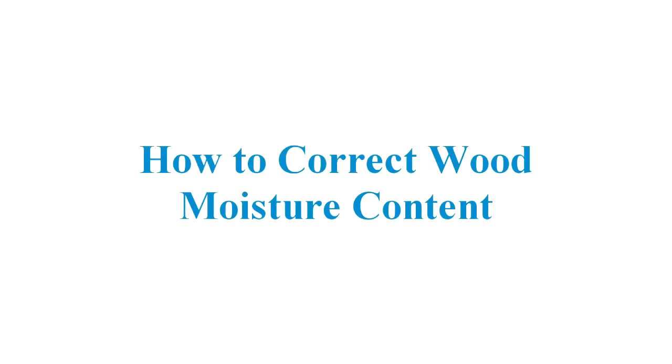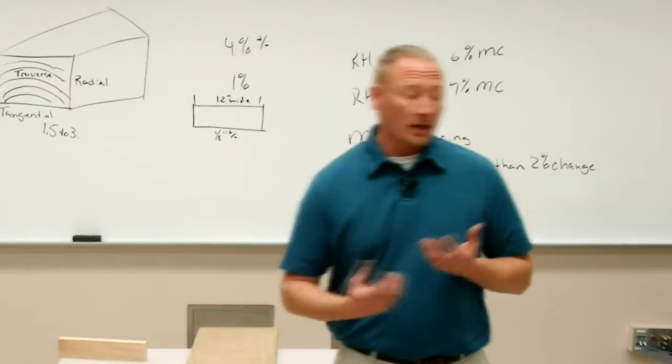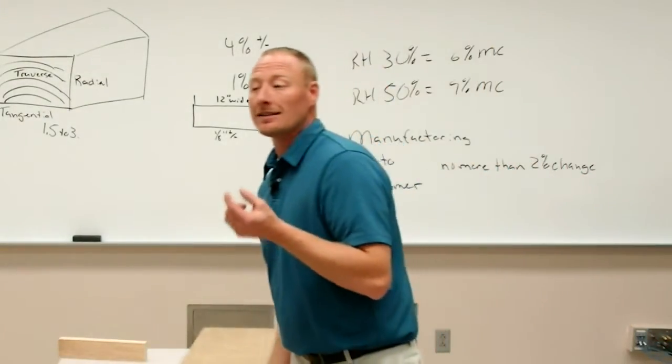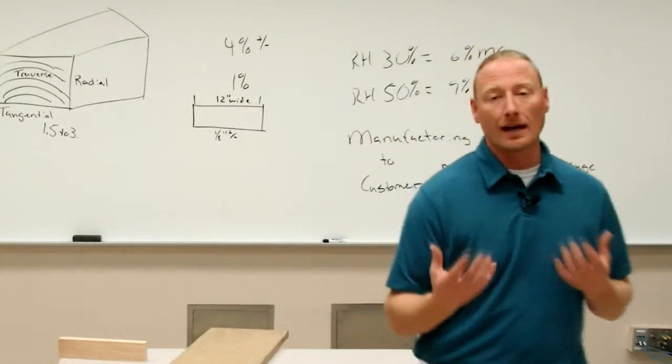There are situations where the EMC or the moisture content is going to change, or we need to actually lower or raise that moisture content. So how do we do that? How can we change the moisture content or the EMC, even if it's a very slight amount, to get it to our desired amount?